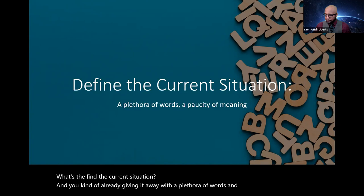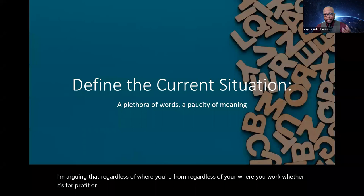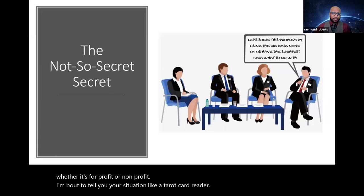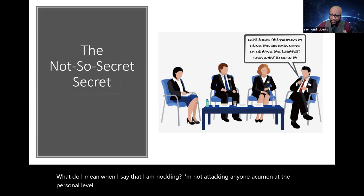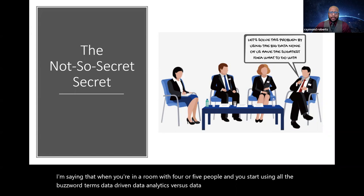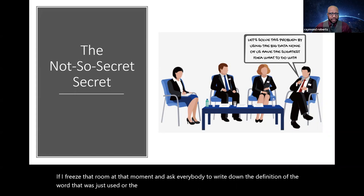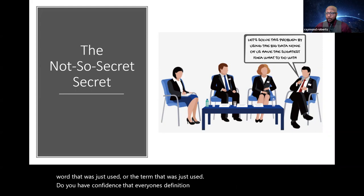So let's define the current situation. And I've kind of already given it away with a plethora of words and a paucity of meaning. I'm arguing that regardless of where you're from, regardless of who you work with, whether it's for profit or nonprofit, I'm about to tell you your situation like a tarot card reader. So the not so secret secret: we're using a lot of terms, a lot of words, but nobody knows what they actually mean. What do I mean when I say that? I'm not attacking anyone's acumen at the personal level. I'm saying that when you're in a room with four or five people and you start using all the buzzword terms—data-driven, data analytics versus data science, big data—if I freeze that room at that moment and ask everybody to write down the definition of the word that was just used or the term that was just used, do you have confidence that everyone's definition would match or even half of them match? That is the not so secret secret.